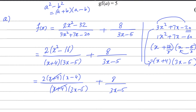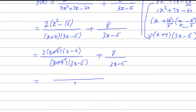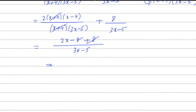The x plus 4 cancels out. Now the denominator is the same — 3x minus 5 — so we write a common denominator of 3x minus 5. The numerators combine: 2 times x minus 4 gives 2x minus 8, plus 8. The plus 8 and minus 8 cancel out, and we get the result 2x over 3x minus 5, which is as required. First part is done.